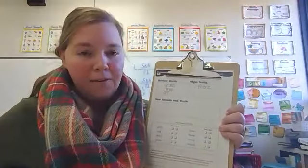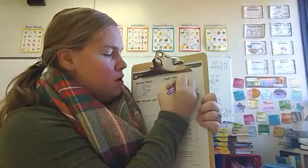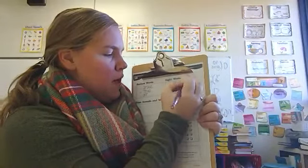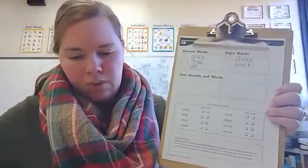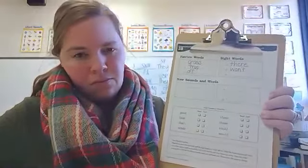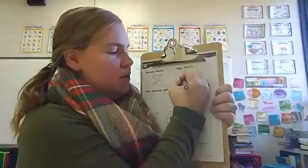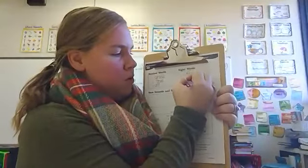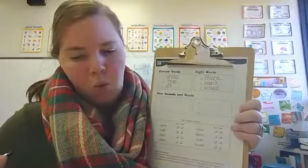Number five, spell the contraction won't. Won't — W-O-N apostrophe T. Number six, would — like, would you like a cookie for lunch? Would — W-O-U-L-D.